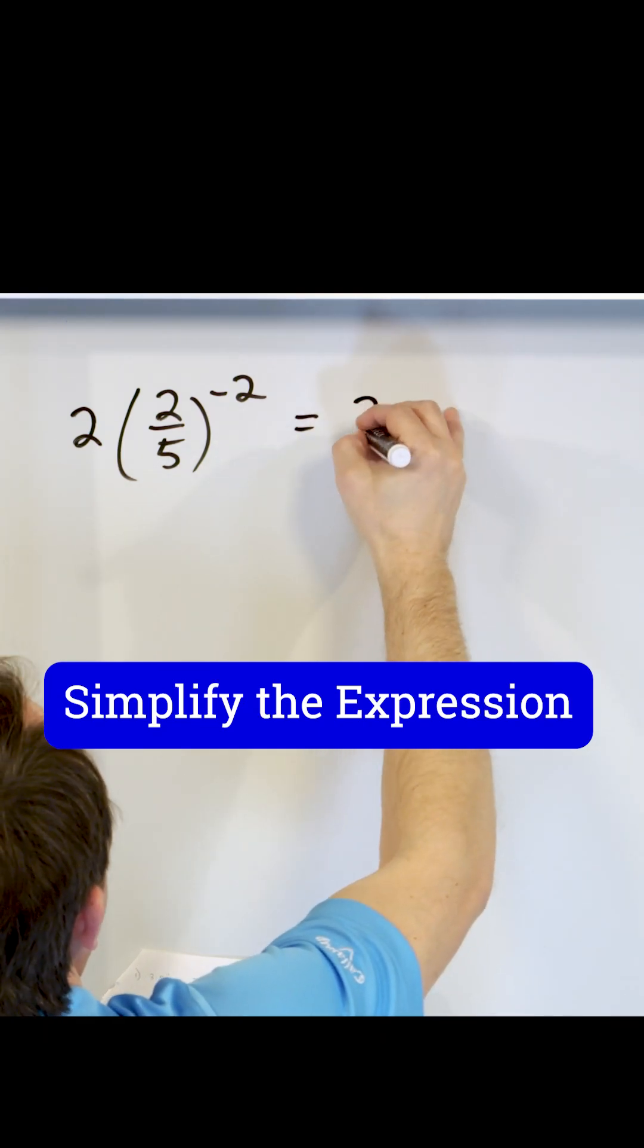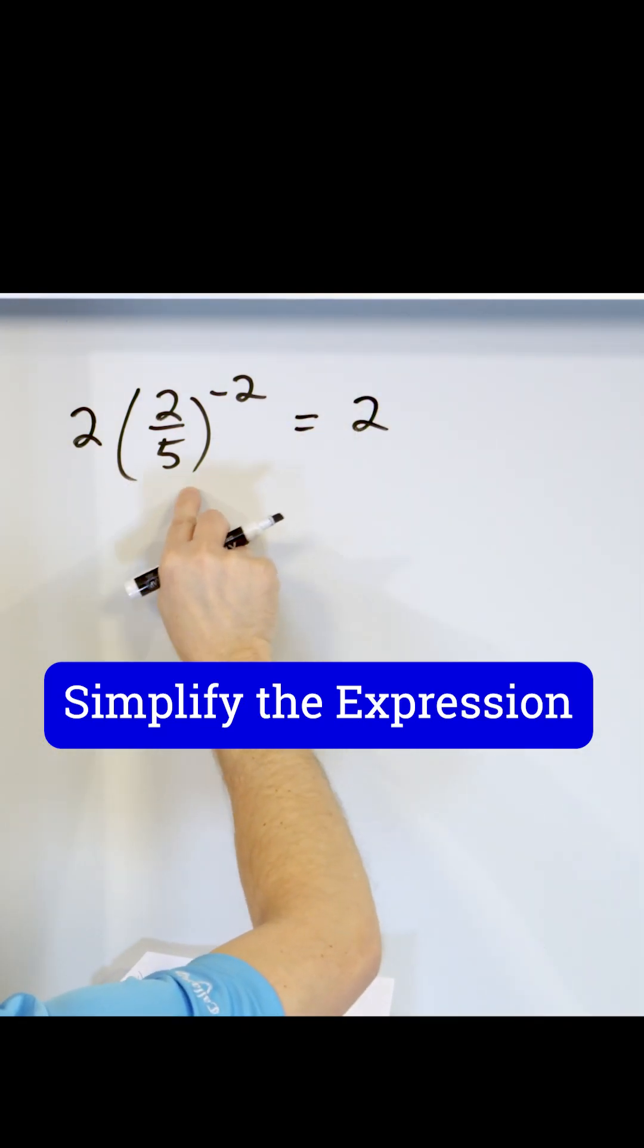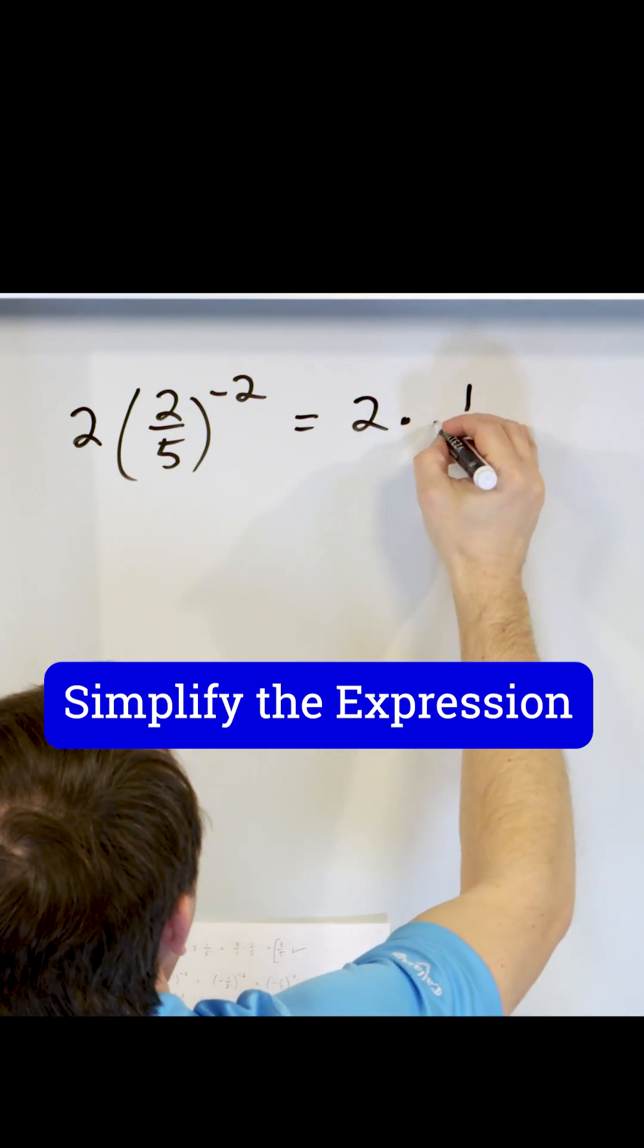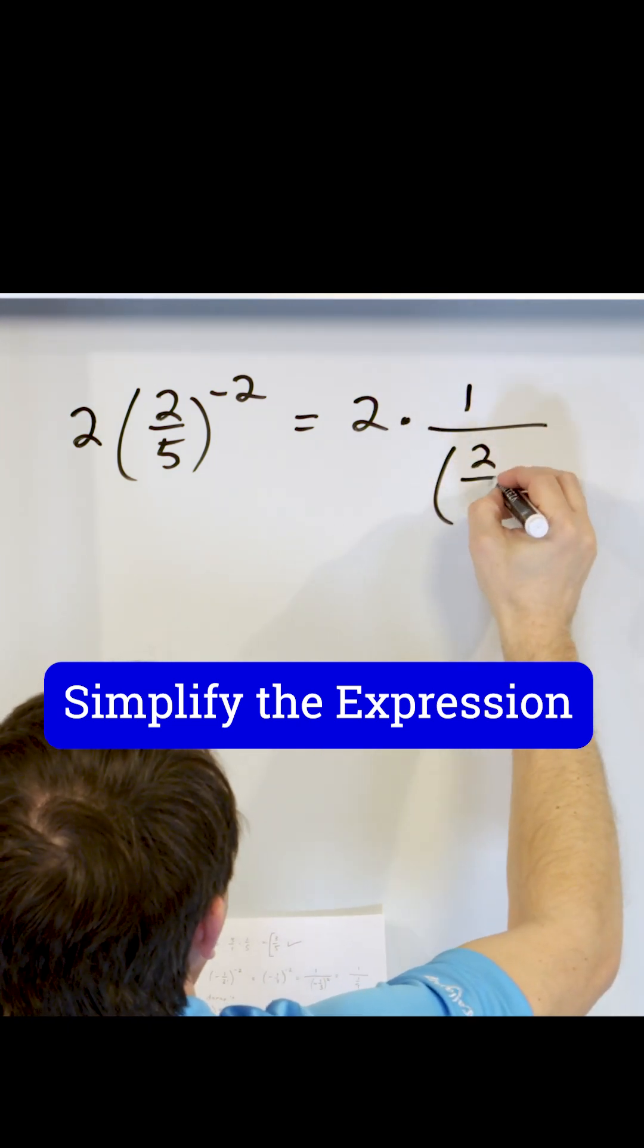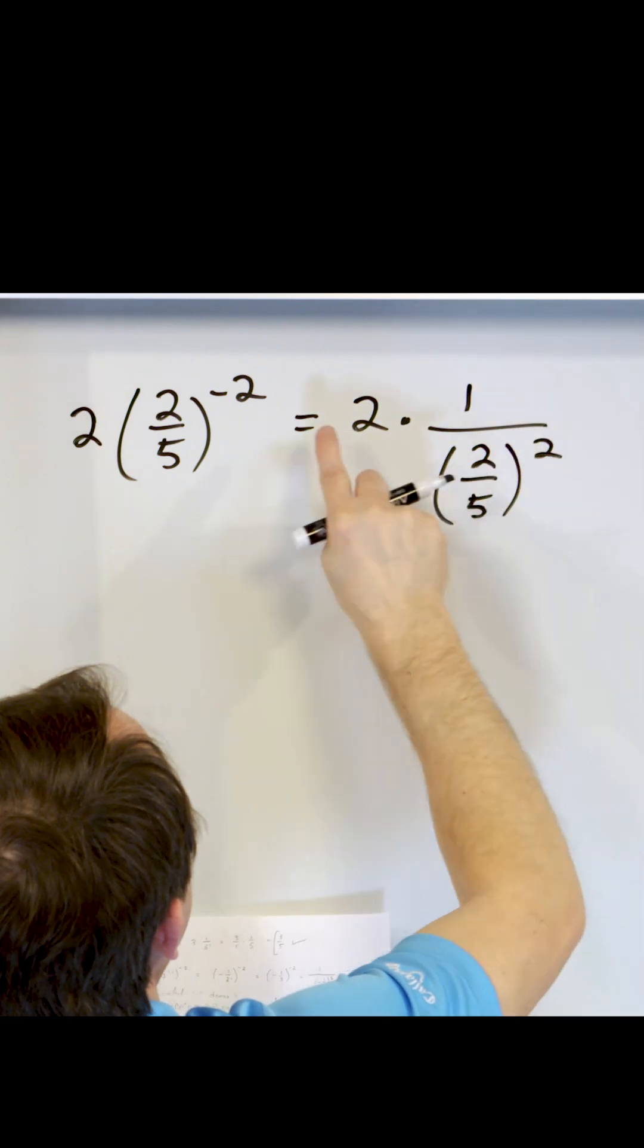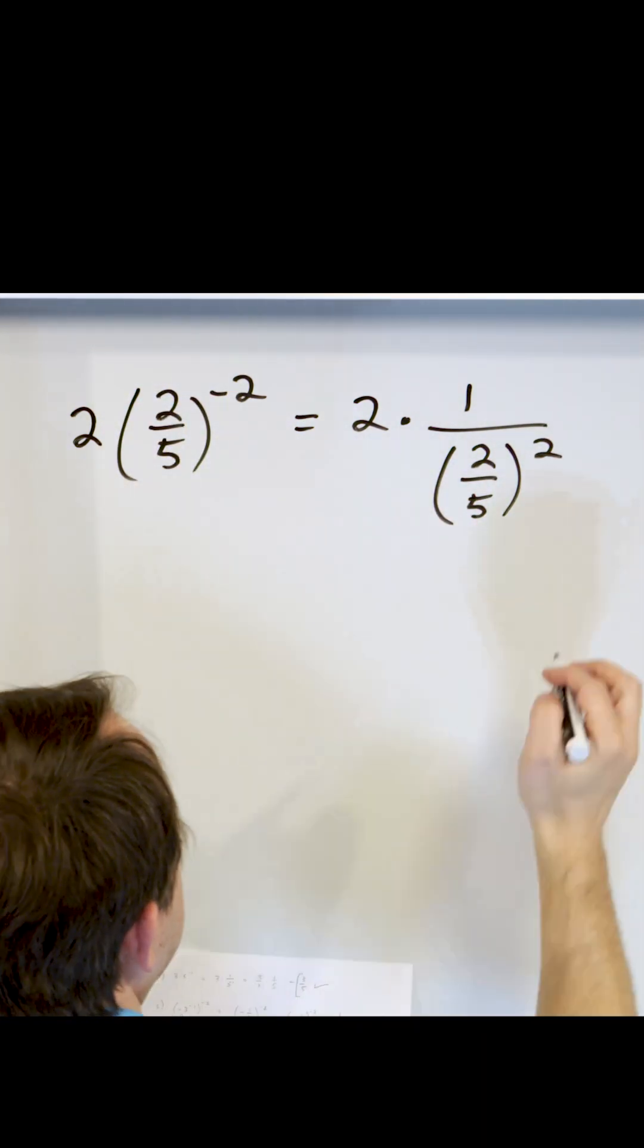I'm going to do it like this. What if we kept the front here? This is raised to the negative two power, so I'm going to multiply that by one over the fraction two-fifths, but that fraction is raised to the positive two power. I moved it downstairs, made it a positive exponent here.